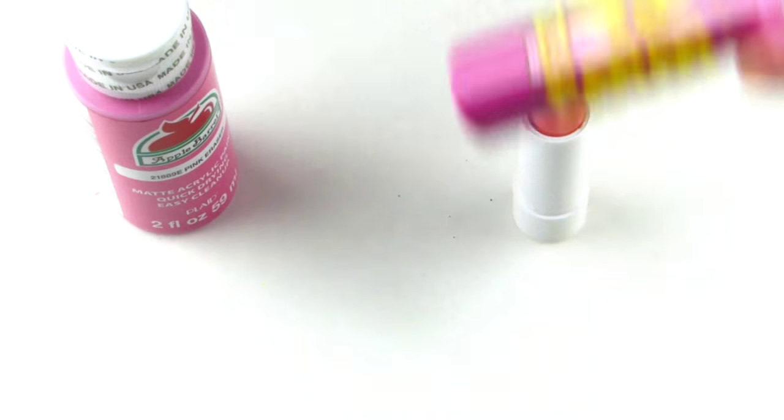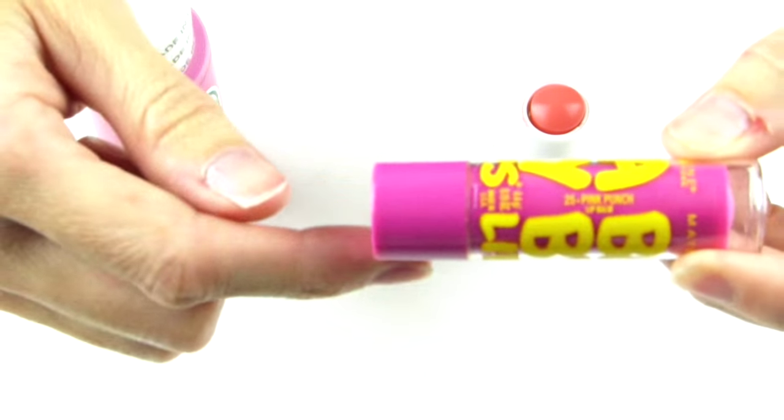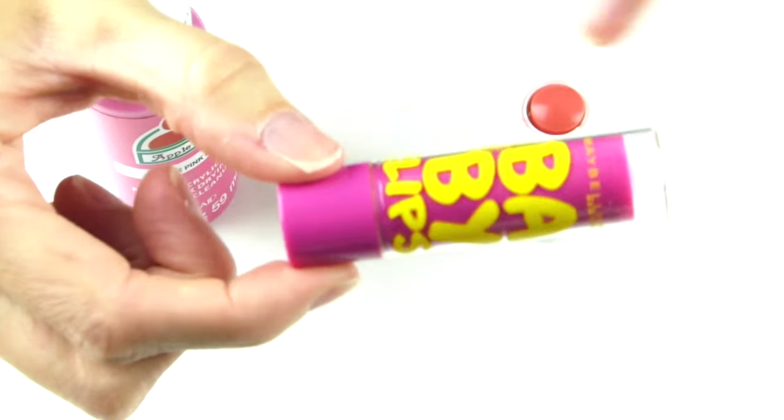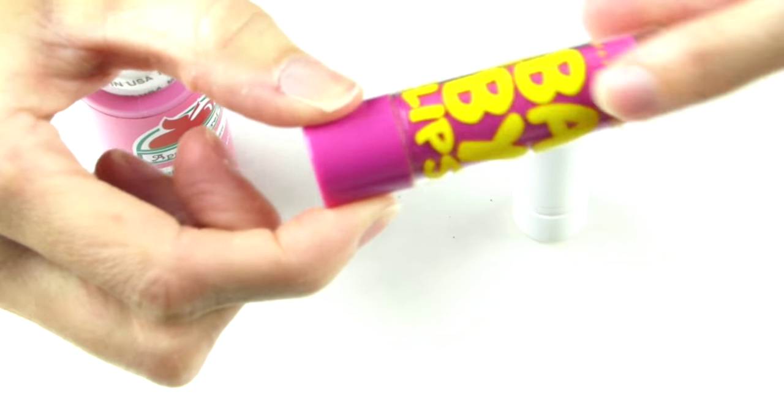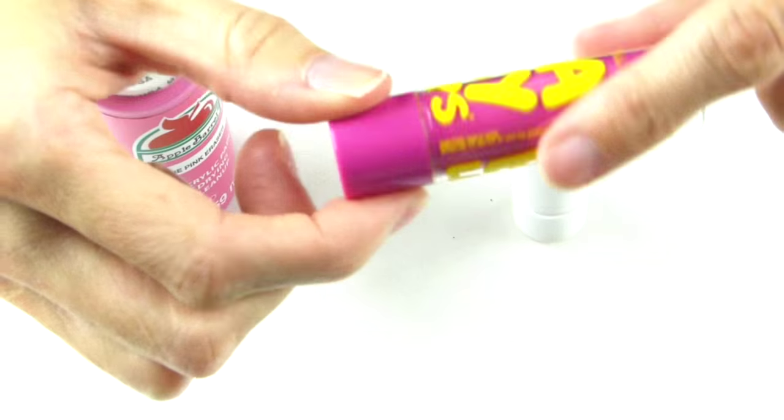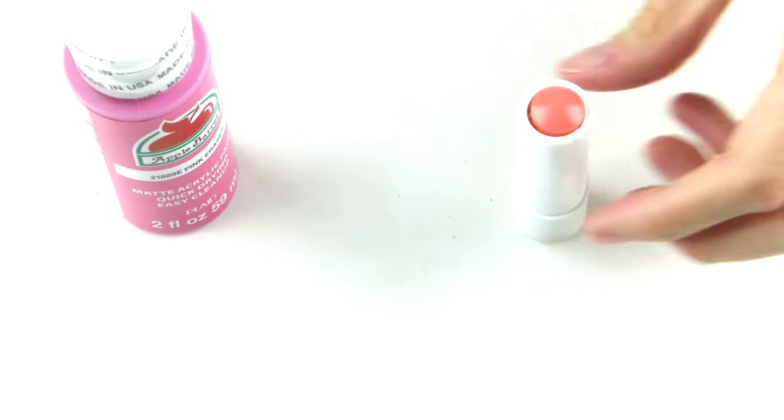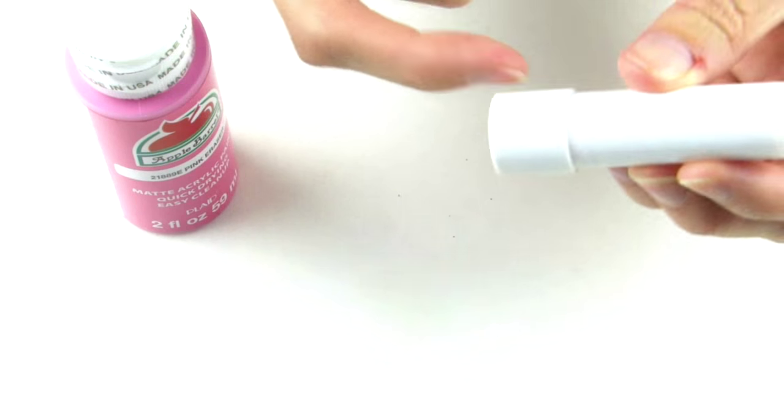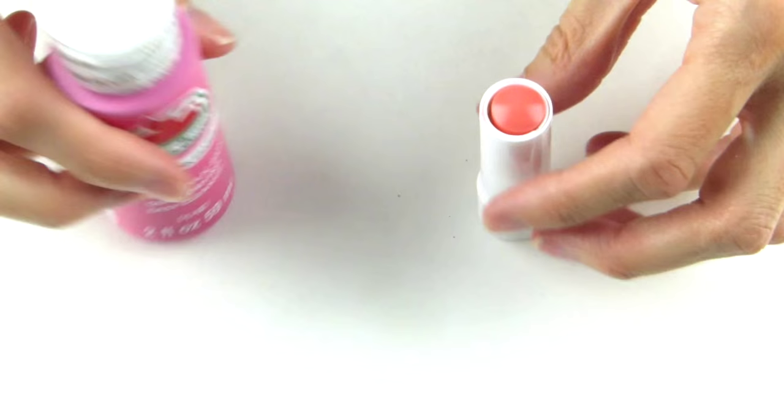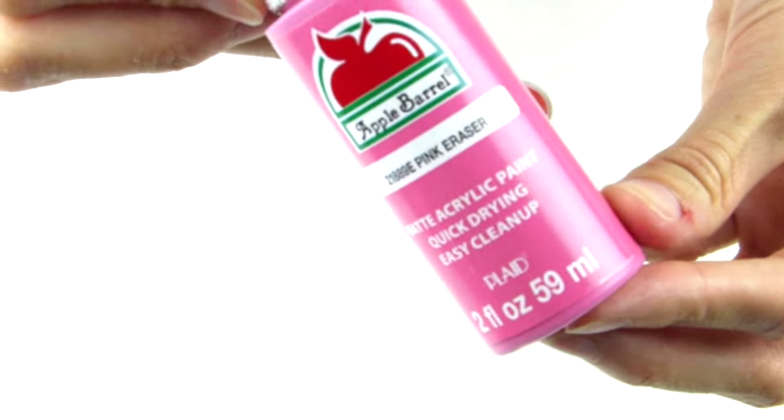Now if you use this container right here, you won't have to do this next step as the bottom is already pink. You will just need to paint the clear part yellow and do your silver glitter on this one. But for this one, since we're using the white one, we are just going to paint the bottom with this pink eraser matte acrylic paint.